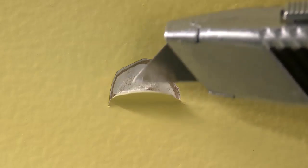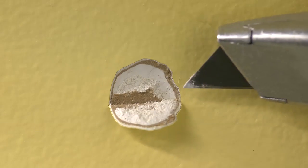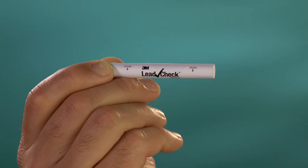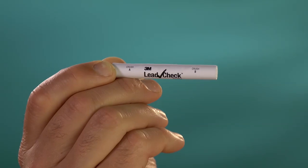Once you have cut through all of the paint layers, use the blade of the knife to fold down the semi-circular flap so that it forms a pocket. Now you may prepare to activate the 3M LeadCheck swab.